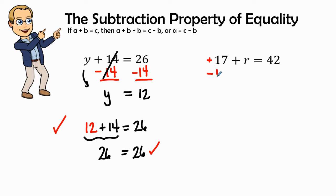Through the subtraction property of equality, what I do on the left side of the equation, I'm also going to do on the right side of the equation. So, I'm going to subtract 17 on both sides.